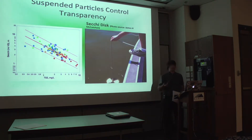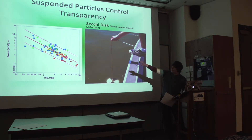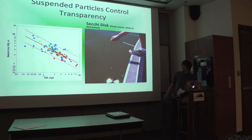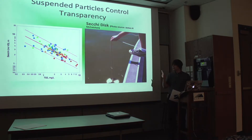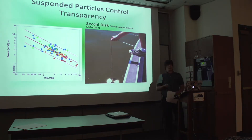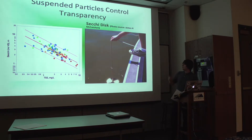Suspended particles can control transparency. Looking at this figure on the left, Secchi depth transparency in meters is on the y-axis (log-transformed), and total suspended solids in milligrams per liter is on a log-transformed x-axis. As particle concentrations increase, transparency decreases. This represents historical data from Green Mountain Reservoir, Grand Lake, Shadow Mountain Reservoir, and Dillon Lake, all displaying a strong negative correlation between transparency and total suspended solids. Total suspended solids as a variable provide a good basis for measuring transparency in a lake. On the right is a picture of a Secchi disk, which measures transparency in a lake.